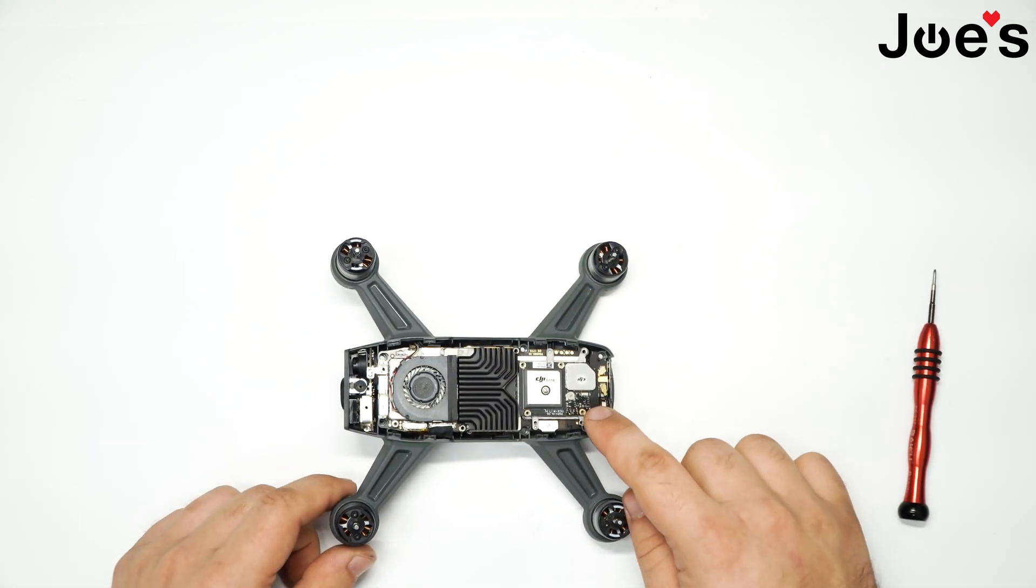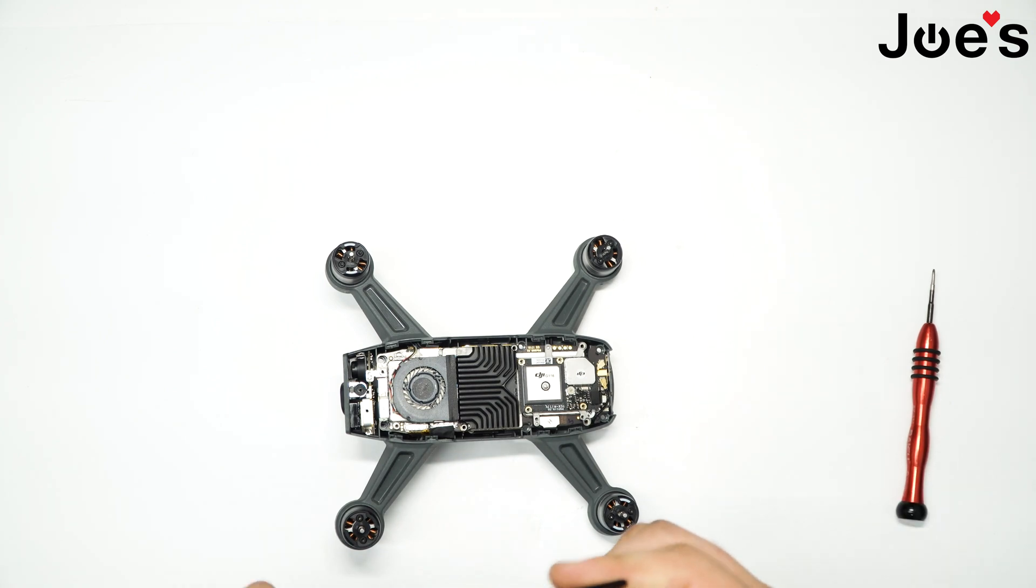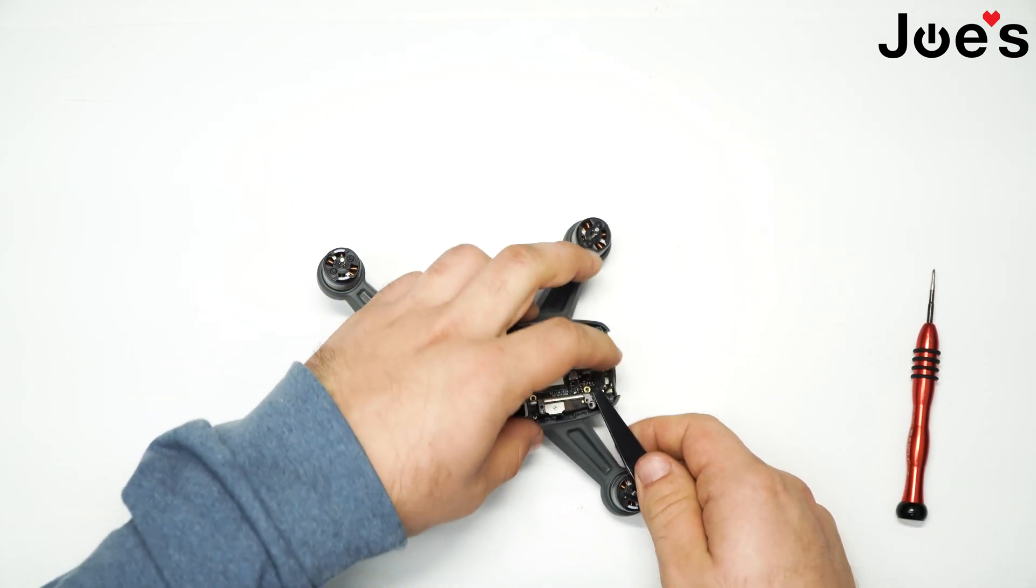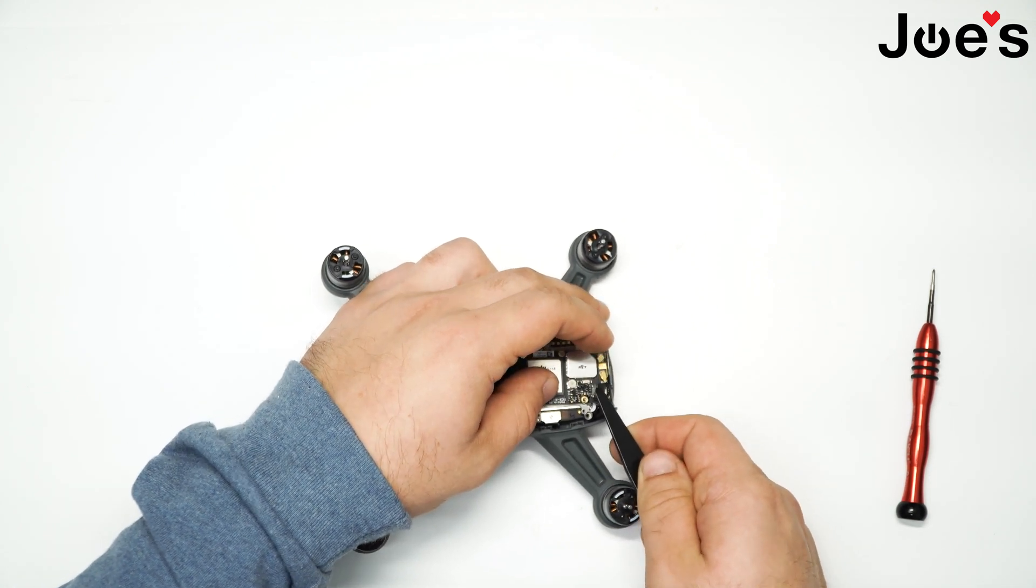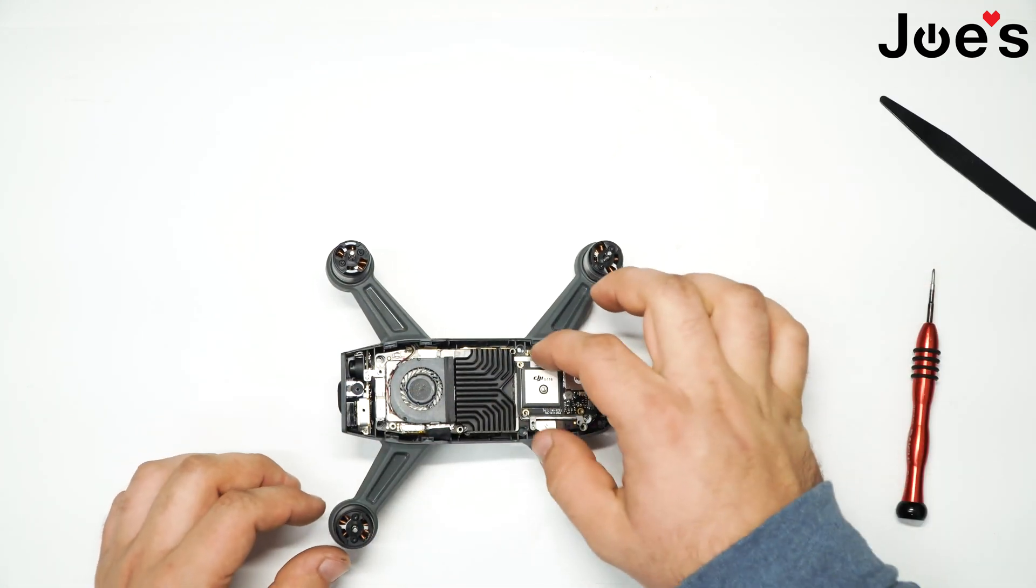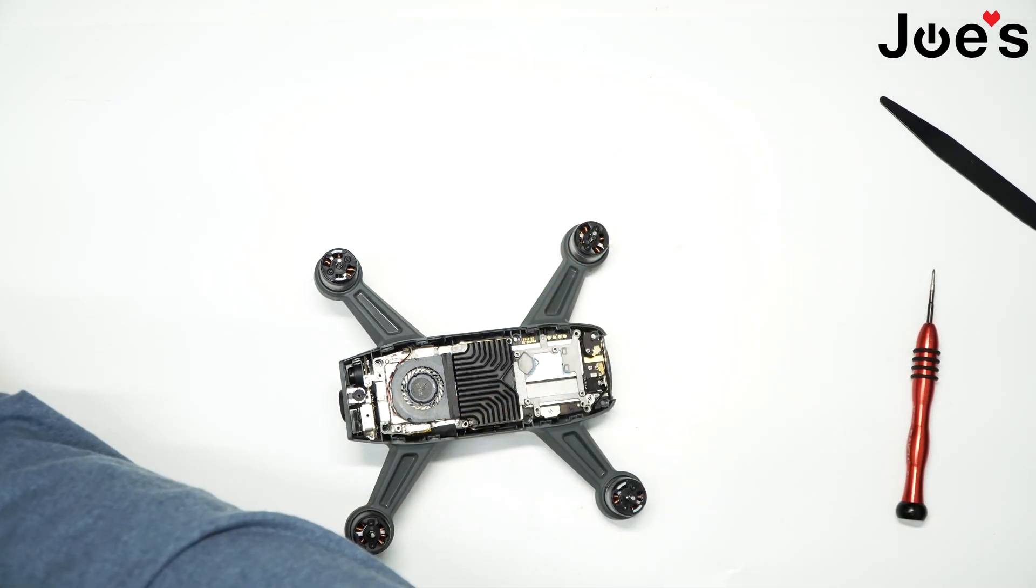Now we have one ribbon right here, so we just carefully grab a pry tool. For this I'll use the thinner end and work under it. Pop it off carefully, put it to the side, lift your module up, then place it to the side.